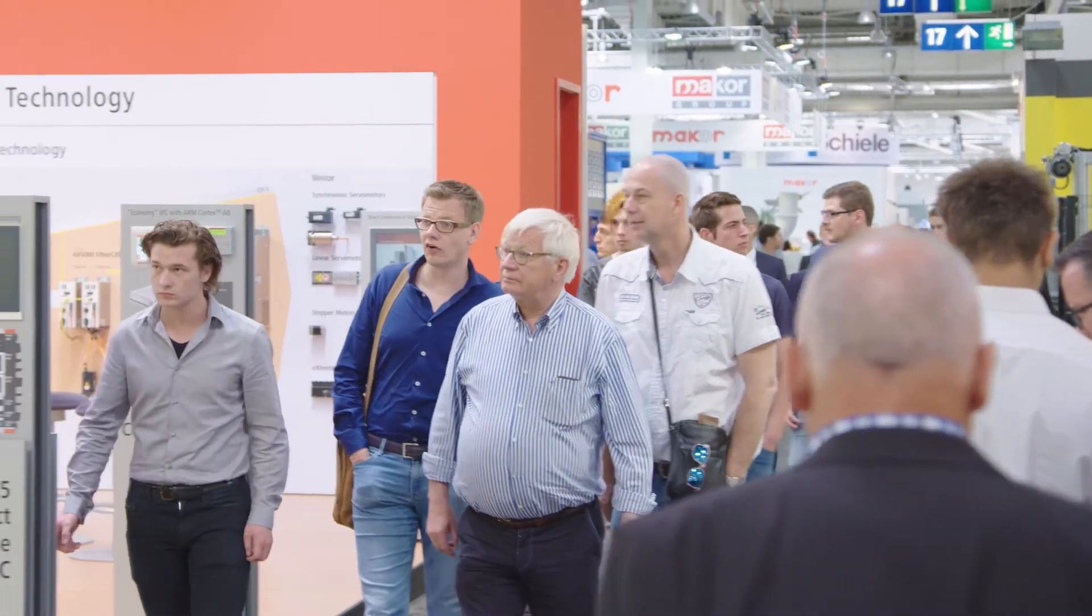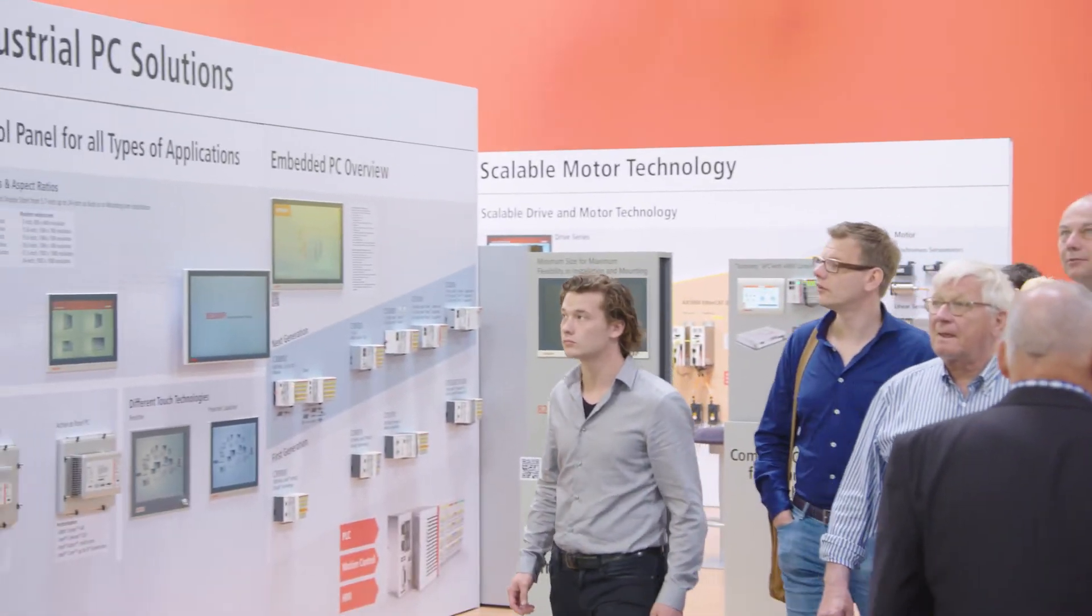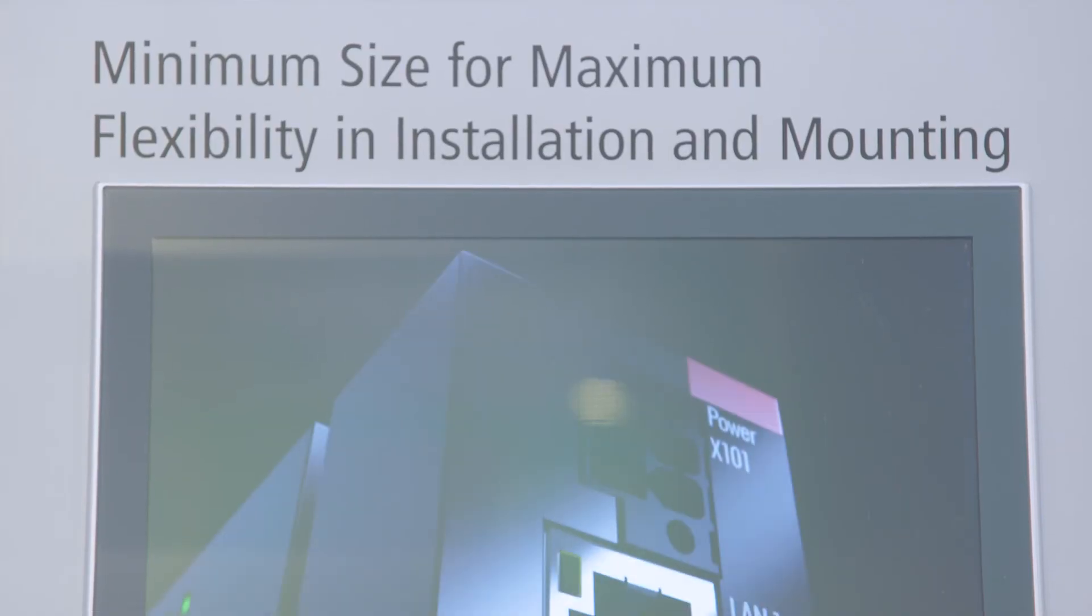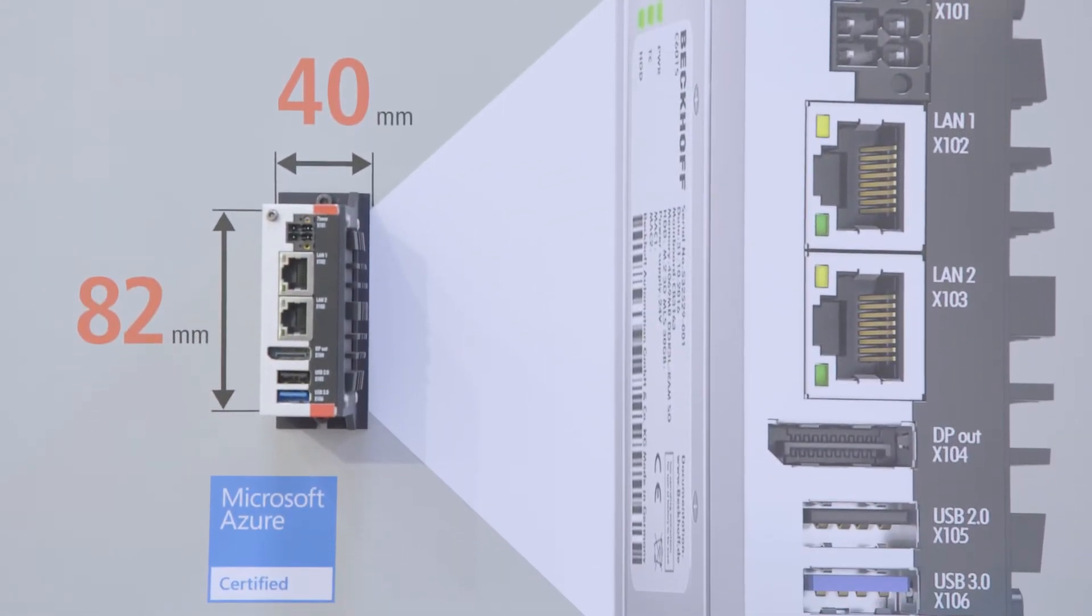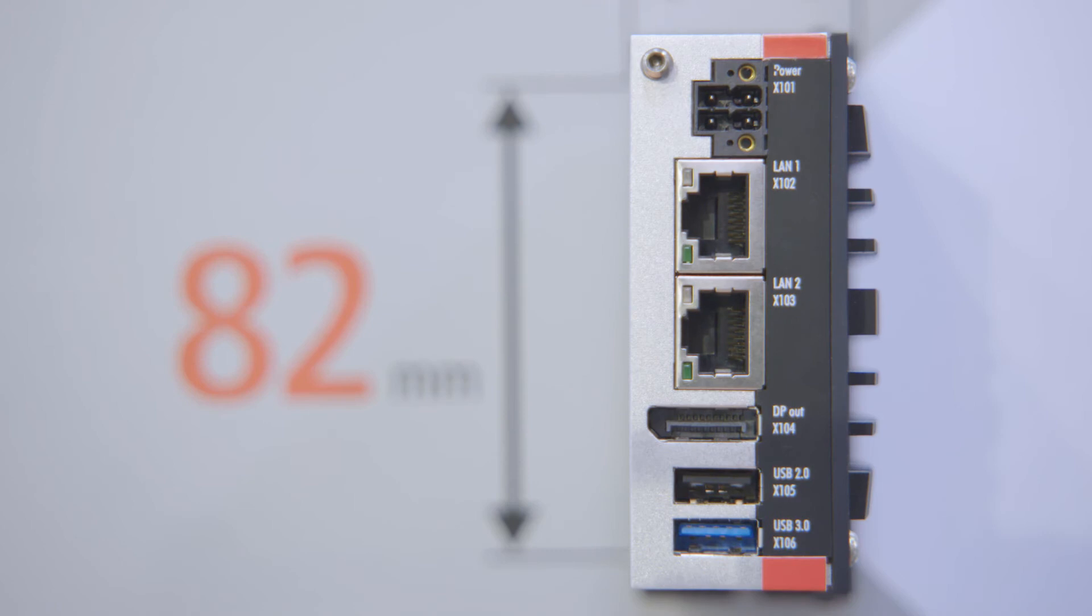With two product innovations, Beckhoff further expands the comprehensive industrial PC portfolio. With dimensions of only 82 x 82 x 40 mm, the ultra-compact C6015 IPC is extremely space-saving and flexible to install.